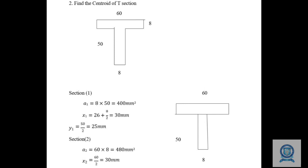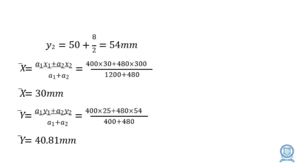For section 1, y1 = 50/2 = 25 mm. For section 2: a2 = 60 × 8 = 480 mm². The centroidal x distance x2 = 60/2 = 30 mm. For y2, we add the breadth of section 1 from the lower base x-axis: y2 = 50 + 8/2 = 50 + 4 = 54 mm.